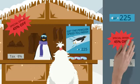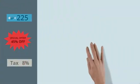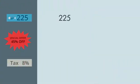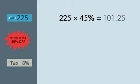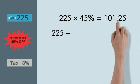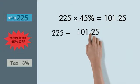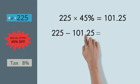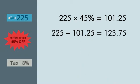First, let's determine the new price of the rental by calculating the discount. 225 times 45% is equal to 101.25. Remember, percent means that you have to divide by 100. Next, subtract the discount from the full price. 225 minus 101.25 is equal to 123.75.